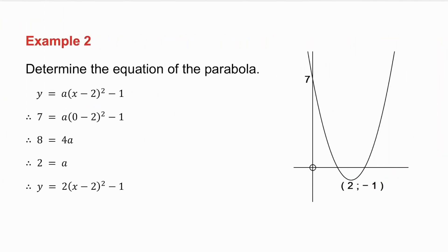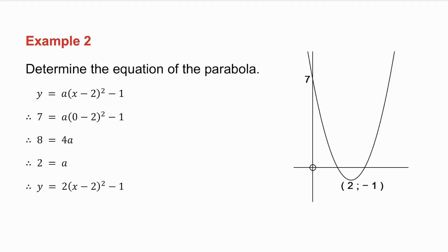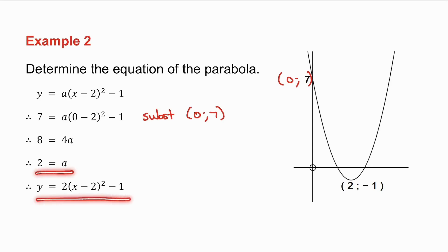With the second parabola, we're given the turning point, so we substitute (2, minus 1) into the turning point form. We're also given the y-intercept with coordinate (0, 7), so we substitute those values in and solve for a to get the equation of the parabola.